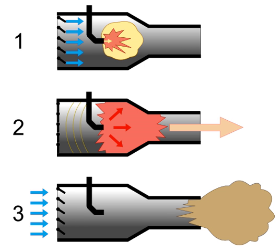The valved pulsejet comprises an intake with a one-way valve arrangement. The valves prevent the explosive gas of the ignited fuel mixture in the combustion chamber from exiting and disrupting the intake airflow, although with all practical valved pulsejets there is some blowback while running statically and at low speed, as the valves cannot close fast enough to prevent some gas from exiting through the intake. The superheated exhaust gases exit through an acoustically resonant exhaust pipe.